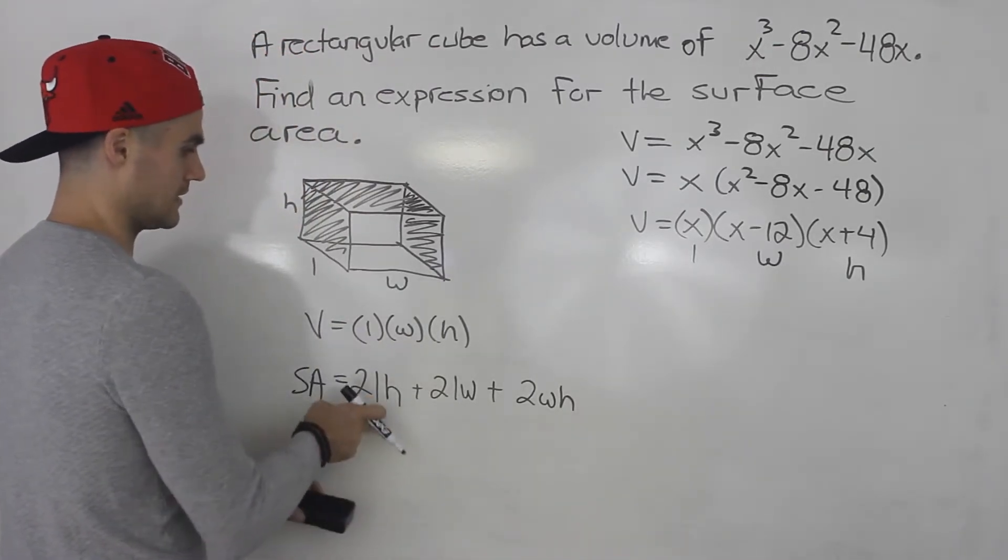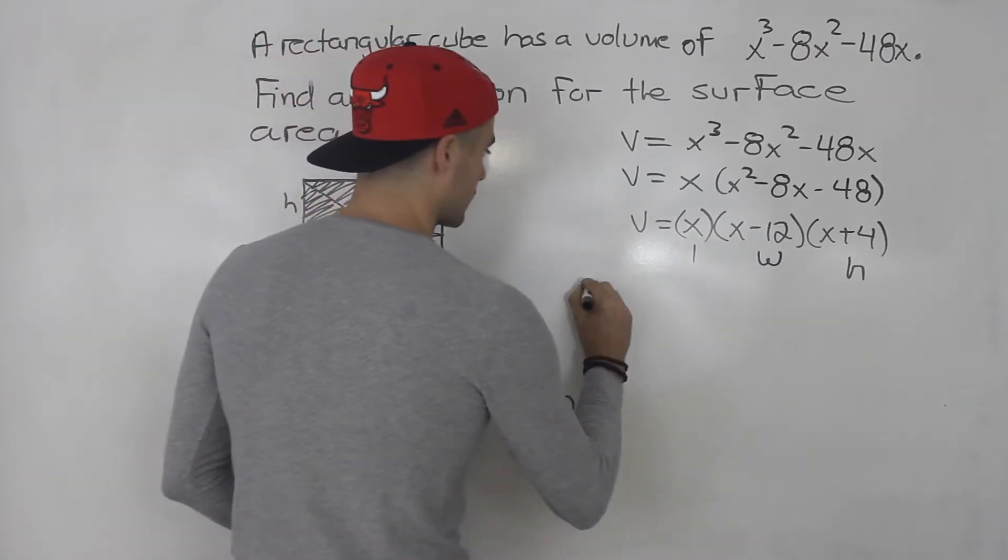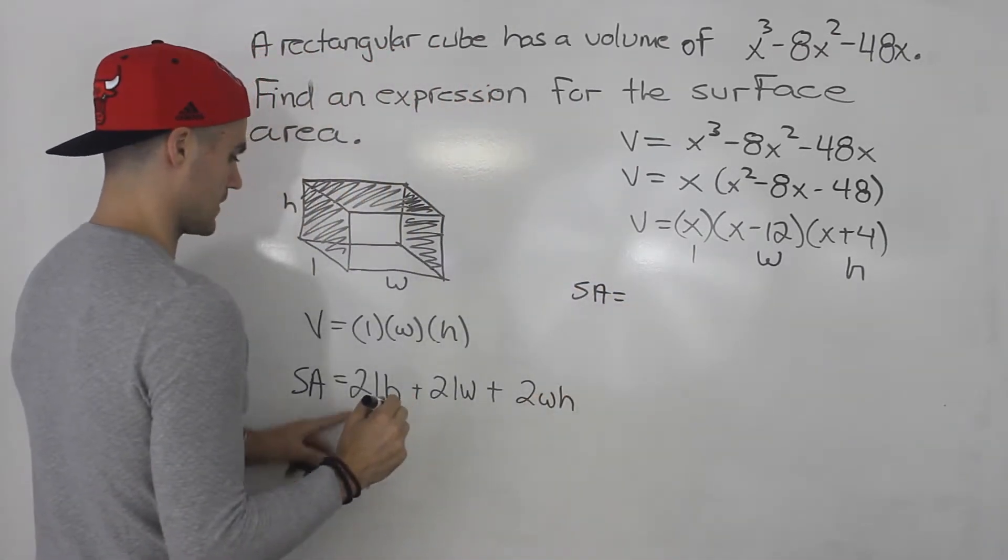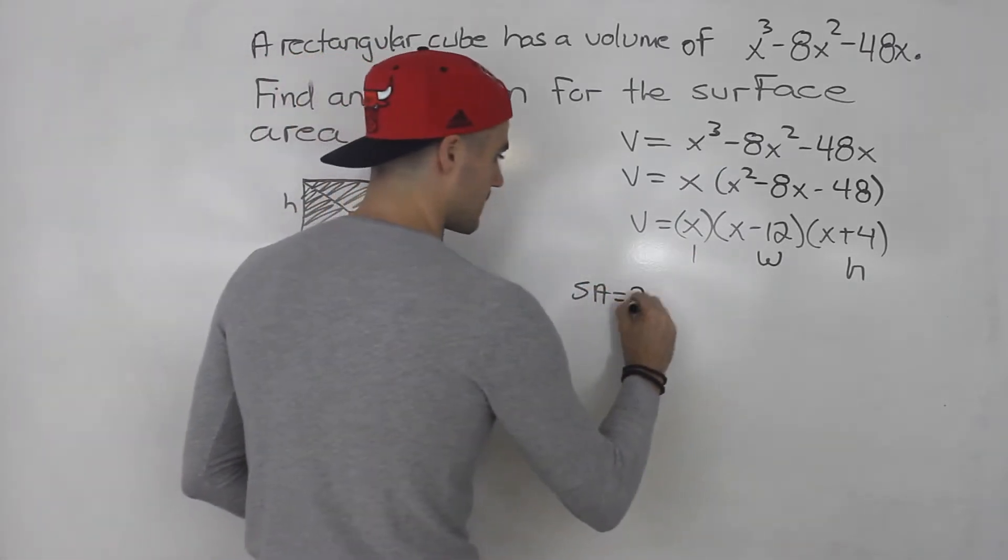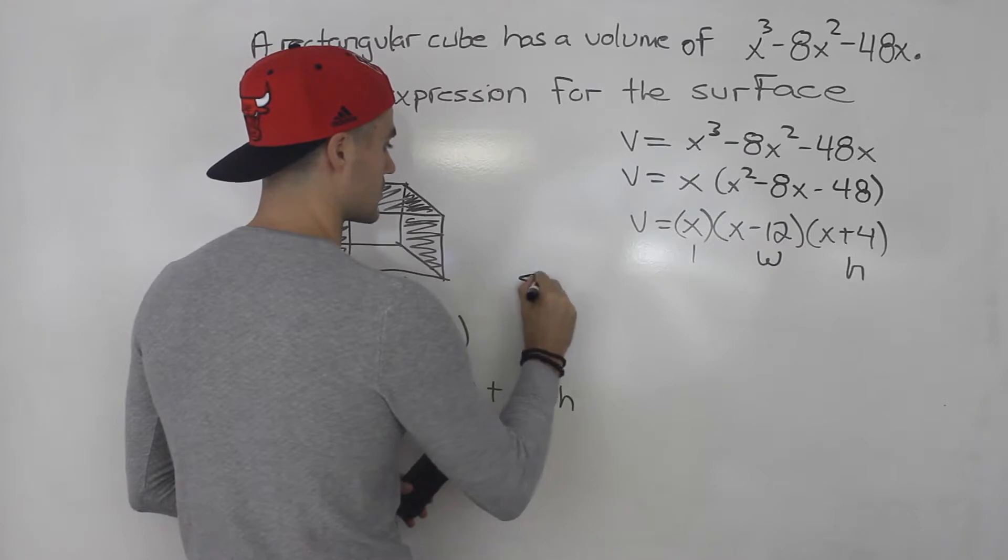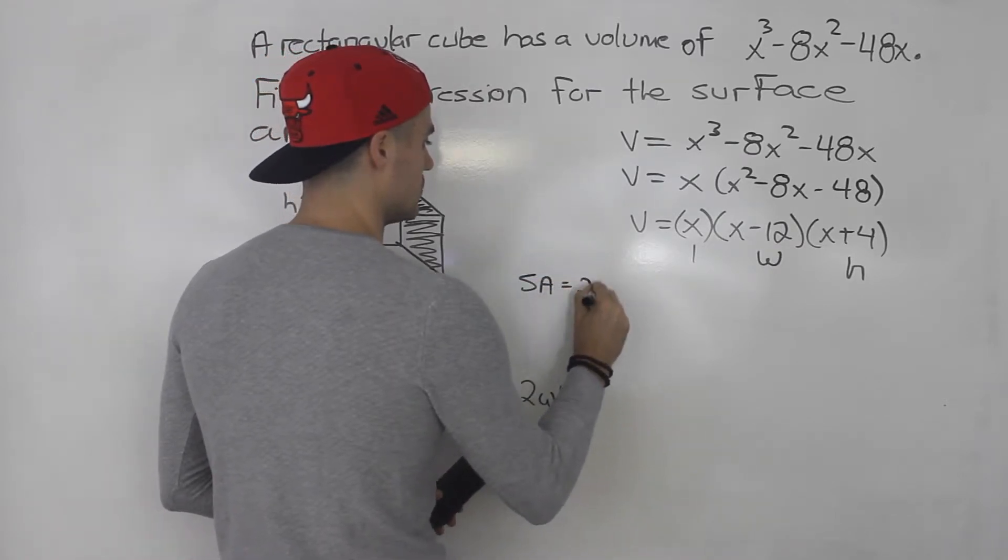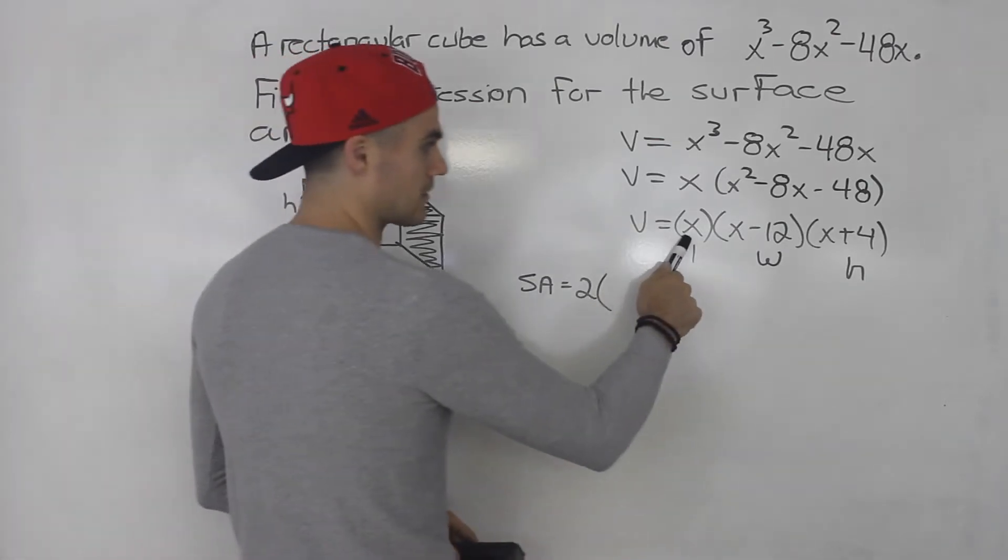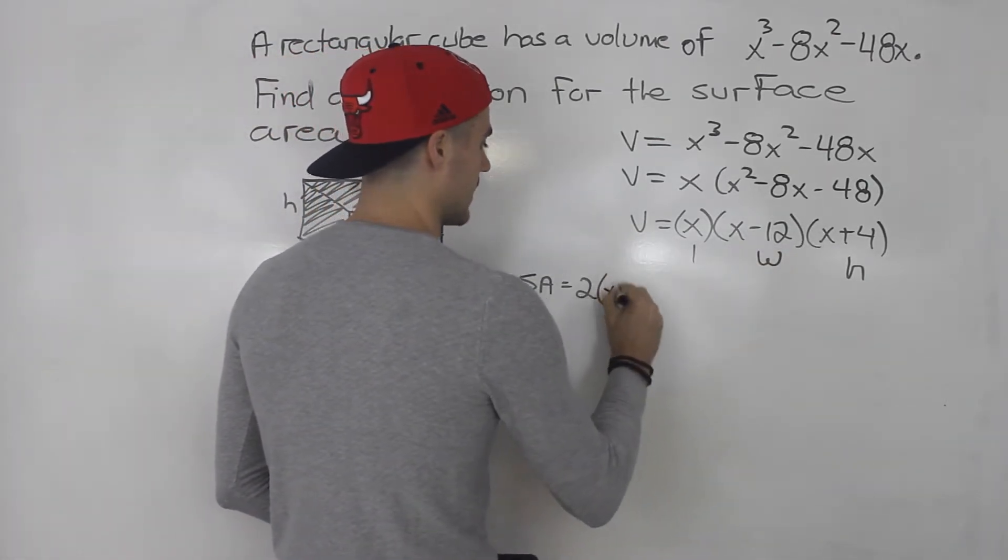So going back to here now, we have to find an expression for the surface area. So what we can do is, actually you know what, let me give myself a little more room. I'm going to start it over here. So surface area is two times length times height. So the length x times the height, x plus 4.